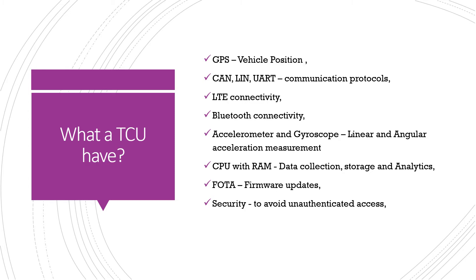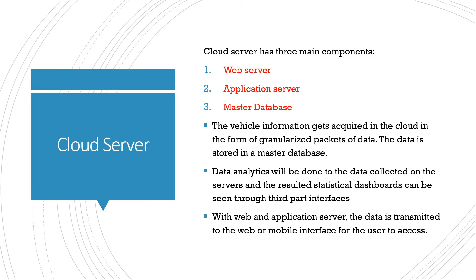It will also have a battery and its own software driver. Once the data is collected, stored, and analyzed to some extent in the TCU, the TCU will share the data to the cloud server. The cloud server has three main components: web server, application server, and database server (or master database). When the cloud server receives the vehicle information, it stores the complete data as granularized packets, and with the help of the web server and application server, the data is transmitted to web or mobile interfaces for the user to access.